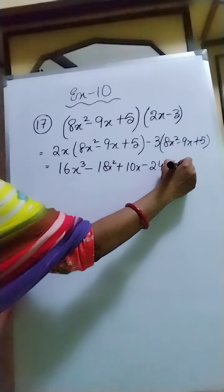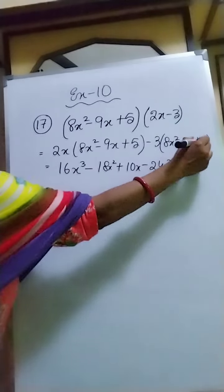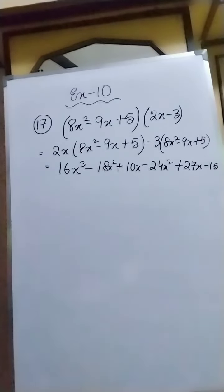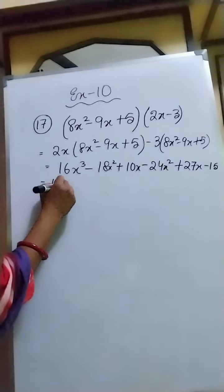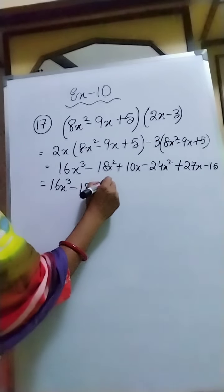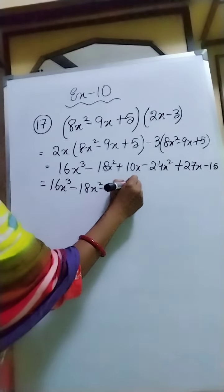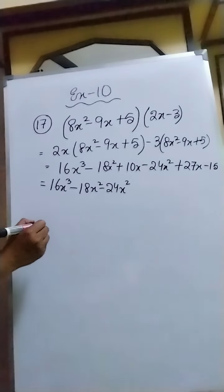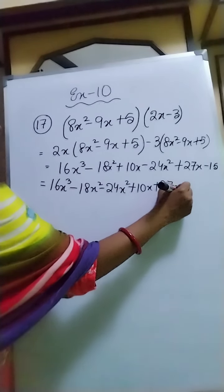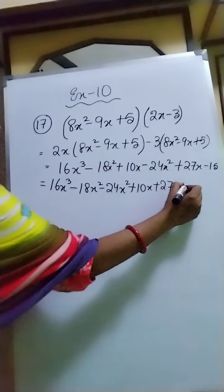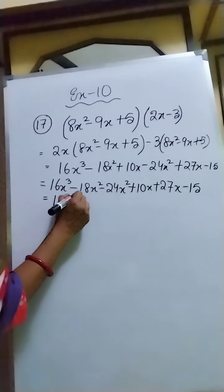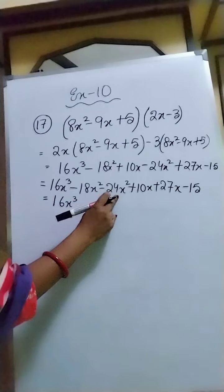So now 2 times 8 will be 16x cubed, minus 18x squared, plus 10x. Then minus 3 into 8x squared will be minus 24x squared, and minus 3 into negative 9x will be plus 27x, and minus 3 into 5 gives minus 15.